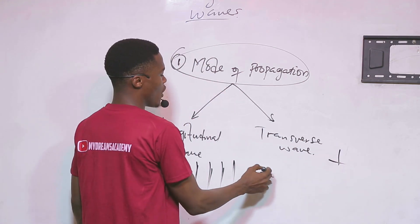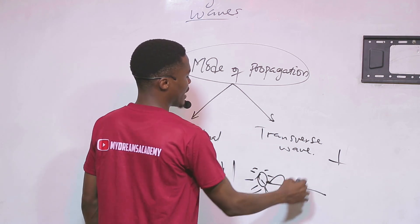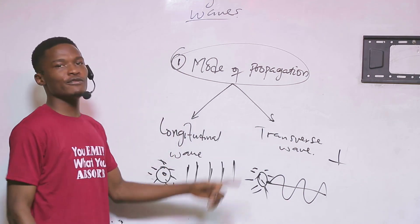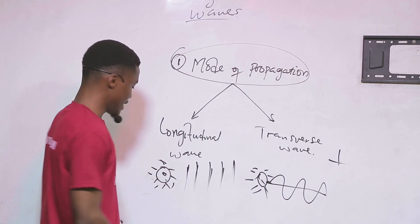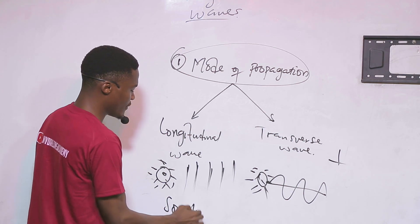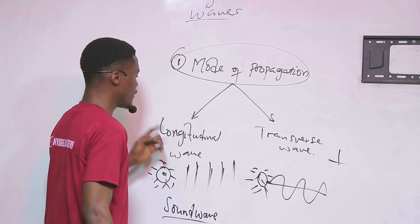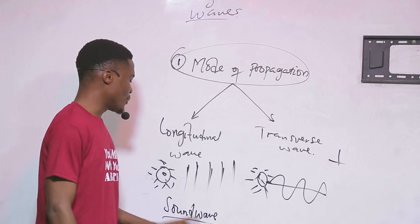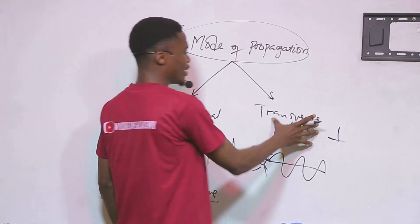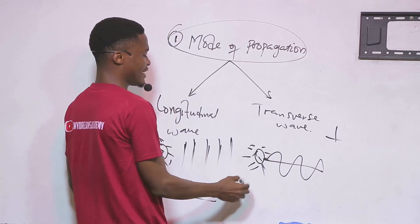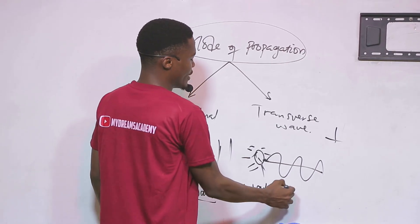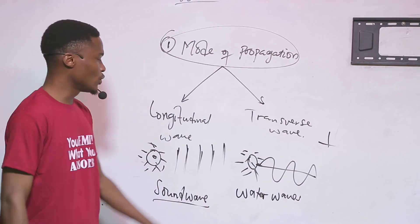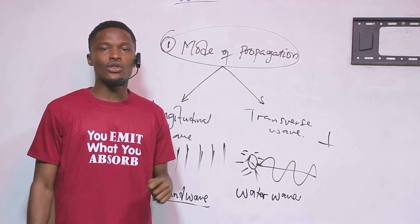Under longitudinal waves, a prominent example you will see in your exams is sound waves — this is a very good example of a longitudinal wave, so make sure you know that. On the other hand, an example of transverse wave is water waves. We are going to talk about more examples of transverse wave later on when we discuss the next classification of waves.